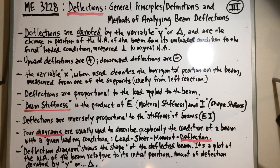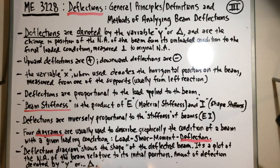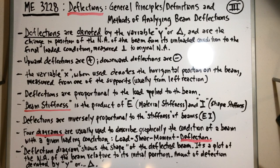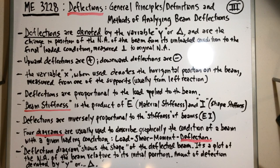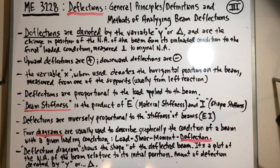The variable X is used to denote the horizontal position on the beam, and it's usually measured from the left reaction support. X denotes a linear measurement taken from that left reaction. Now here are some strength of materials criteria: deflections are directly proportional to the load applied to the beam, but inversely proportional to the stiffness of the beam.